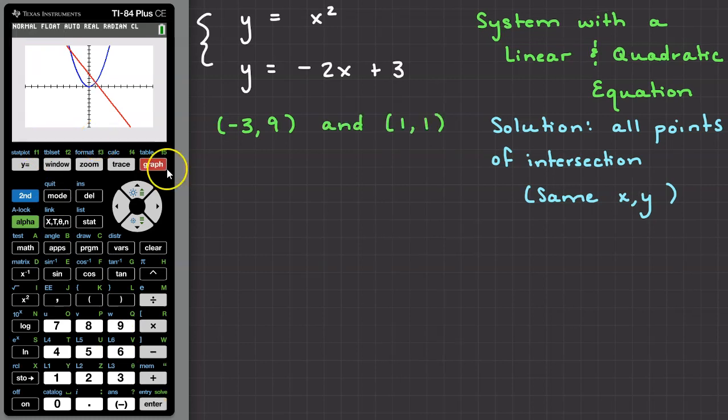Since this was a system containing a quadratic and a linear equation, there could be up to two points of intersection, or two solutions for the system.